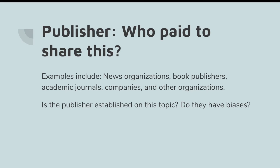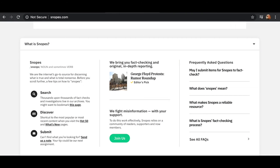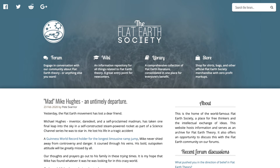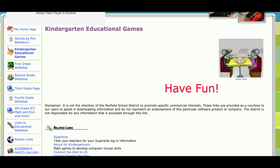For websites, one trick is to pay attention to the domain type — whether the site ends with .com, .org, .edu, or .gov. Generally speaking, .edu, .org, and .gov are considered more trustworthy since .com is commercial and usually exists to sell something. But there are exceptions to this rule. Some trustworthy news sites end with .com, there are some shady .org organizations out there, and you definitely wouldn't want to use a site from an elementary school, which would end with .edu.